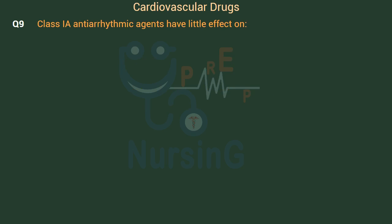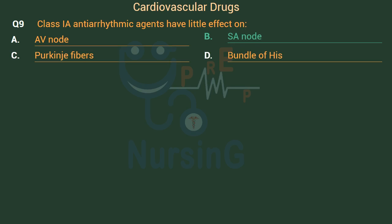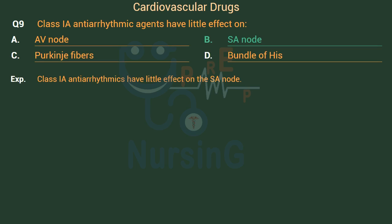Class IA antiarrhythmic agents have little effect on: Option A: AV node. Option B: SA node. Option C: Purkinje fibers. Option D: Bundle of His. The right answer is Option B: SA node. Class IA antiarrhythmics have little effect on the SA node.